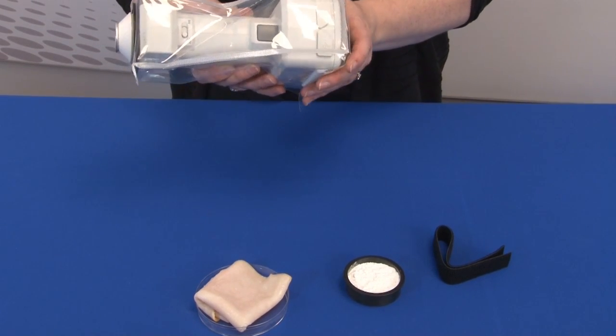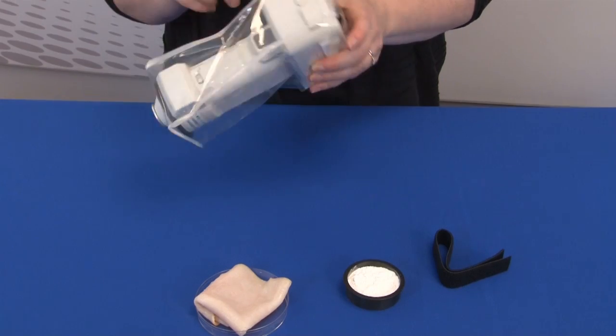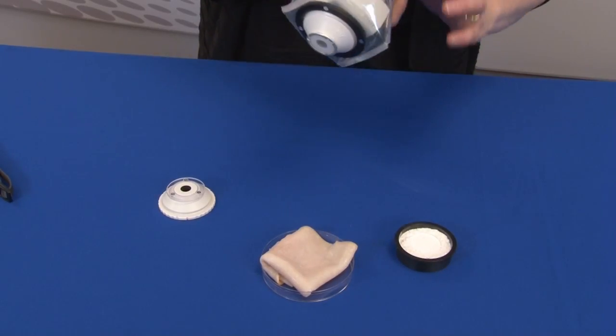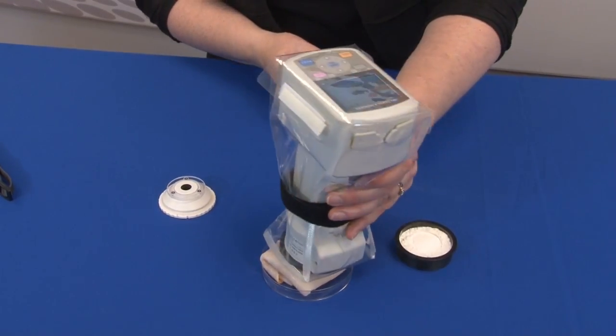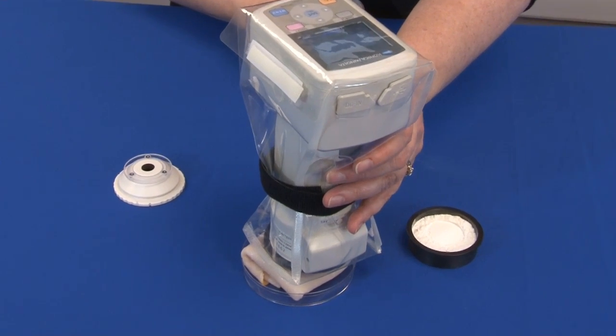After fastening around the instrument, the dust cover will protect foreign materials from getting inside the instrument. This will prevent inaccurate measurement readings and, if necessary, costly repairs.